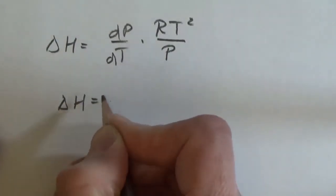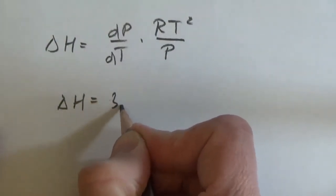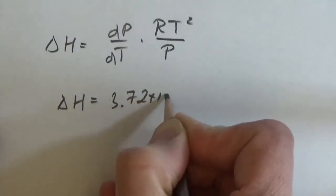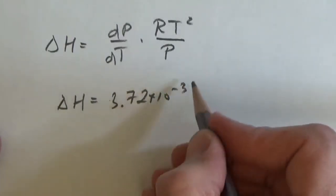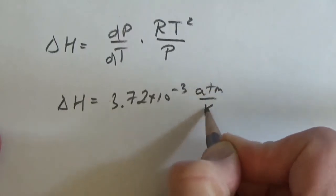Or delta H is equal to 3.72 times 10 to the minus 3—that's atm per K—times